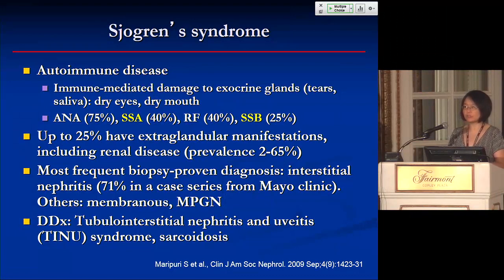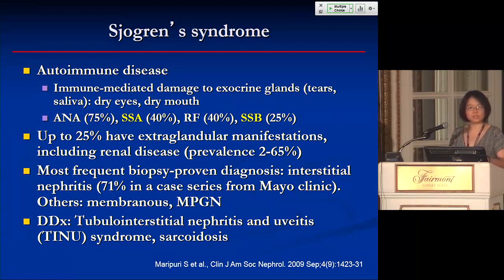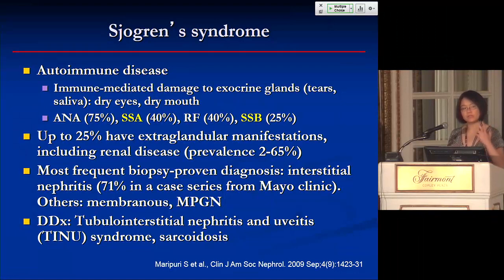The differential diagnosis includes TINU — tubulo-interstitial nephritis and uveitis — which shares some clinical symptoms with Sjögren's. If SSA and SSB antibodies are positive, you're more likely to think Sjögren's. With dry mouth and salivary gland involvement, think Sjögren's. Sarcoidosis can also mimic this because of its propensity to cause AIN.